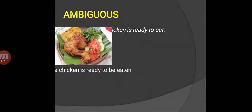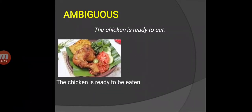For practice, let's say the chicken is ready to eat. One person can get it as the chicken as food - it's ready to be eaten. So it's ambiguous.